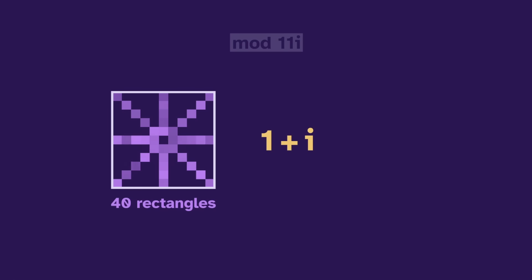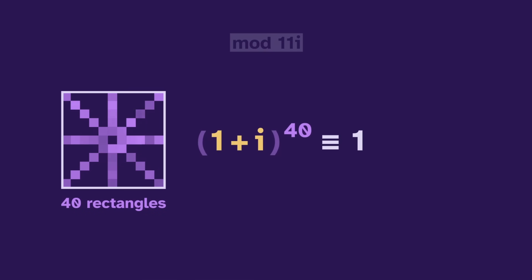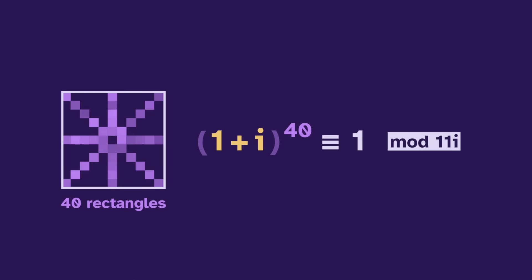So we can focus on just the middle one. Now there are only 40 rectangles. This is the 1 plus i pattern. So we go through 40 powers, then repeat, meaning that 1 plus i to the 40 equals 1, the starting point — at least this is true mod 11i.